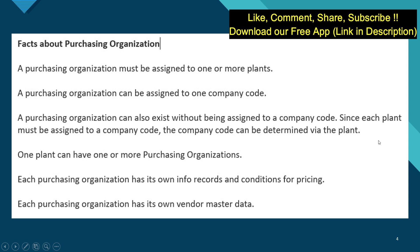A purchase organization can exist without being assigned to a company code, working as a standalone organization. However, each plant must be assigned to a company code — if not, the company code can be determined via the plant. One plant can have more than one purchase organization. Each purchase organization has its own info records, conditions for pricing, and its own vendor master data.